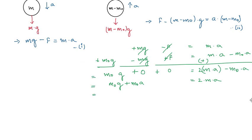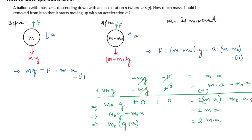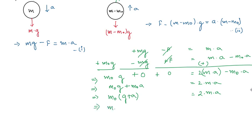Simplifying further, taking m₀ as common: m₀ times (g plus a) is equal to 2ma. That is our expression. Here a is a given acceleration, g is a constant, and m is also given. So we have an expression for m₀ in terms of variables and constants we were already given.